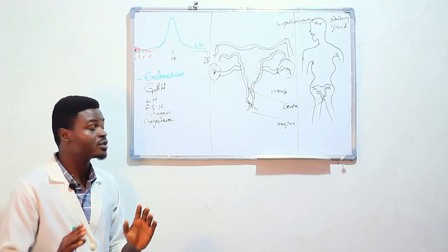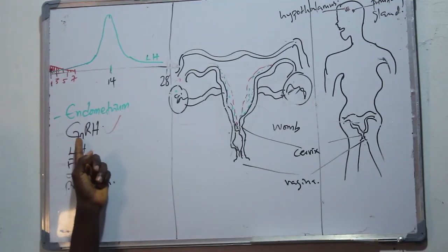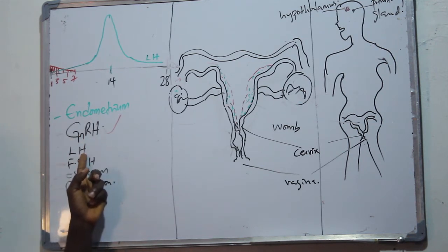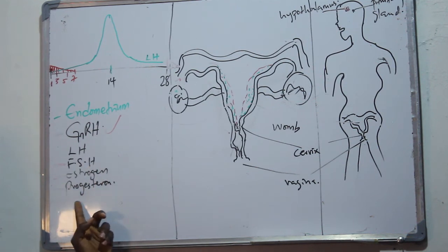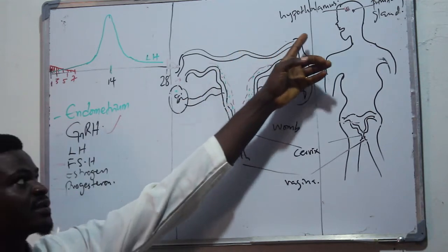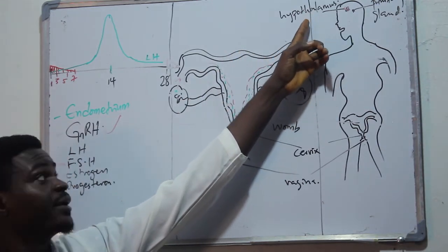There are a few hormones we also need to define: the gonadotropin releasing hormone called GnRH, the luteinizing hormone LH, follicle stimulating hormone FSH, estrogen, and progesterone. It will also be nice to know the two important glands in the brain called the hypothalamus and of course the pituitary gland.